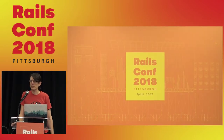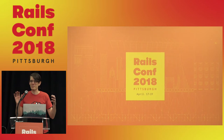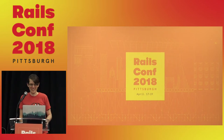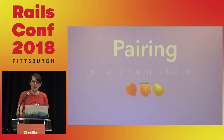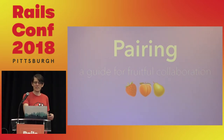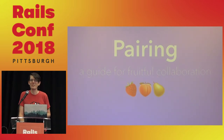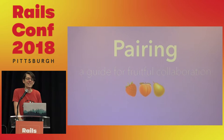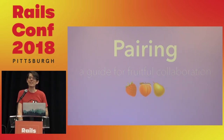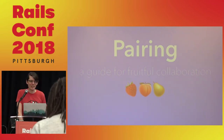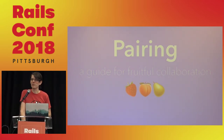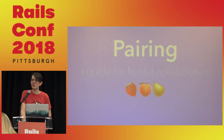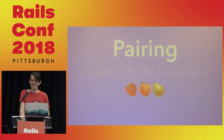This talk is called Pairing: A Guide for Fruitful Collaboration — strawberry, peach, pear. I just saw on my way in that they didn't get the emoji onto the sign, and I'm so upset. I did hear that I managed to break the proposal website by submitting a talk with emoji in the title, so I've got that going for me.